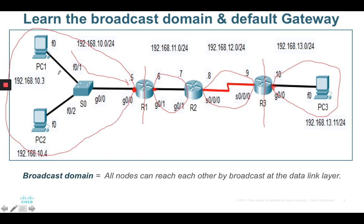Here's another situation: PC1 would like to ping PC2. Because they belong to the same broadcast domain — the same network, which is 192.168.10.0 — they do not need to have a default gateway. Same network, you don't need a default gateway. But if you want to ping from one network to another network, you need to configure a default gateway.